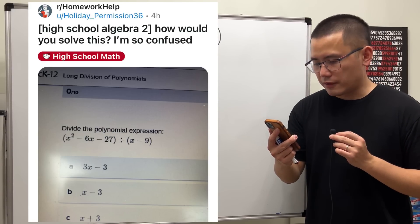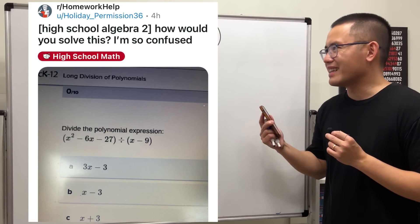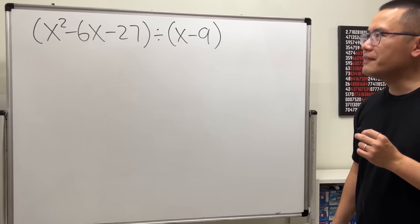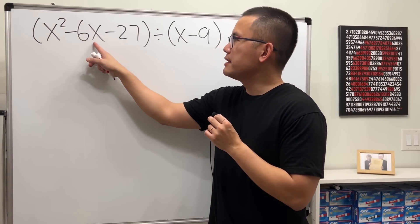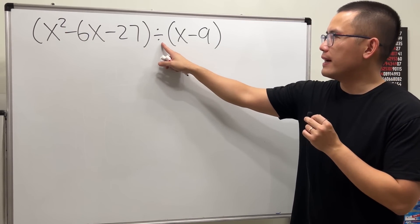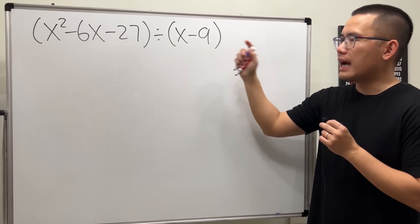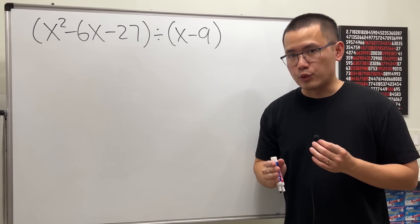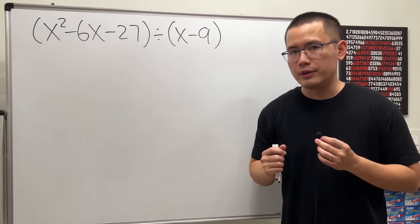How would you solve this? I'm so confused. Don't worry, I can help you. Here we have x squared minus 6x minus 27 divided by x minus 9. And for this question, the direction says we are going to do polynomial long division.